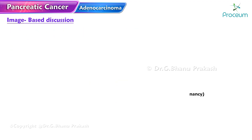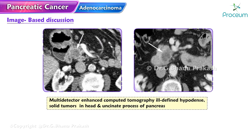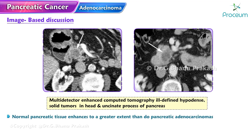Multi-detector enhanced CT images from two different patients demonstrate ill-defined hypodense solid tumors in the head and uncinate process of the pancreas. Typically, normal pancreatic tissue enhances to a greater extent than pancreatic adenocarcinomas, which accounts for their hypodense appearance on contrast-enhanced CT.